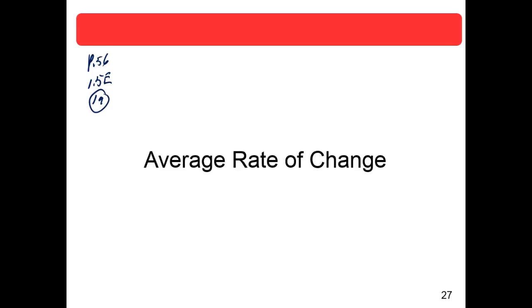It says find the zeros of the function. In these exercises, find the zeros of the function algebraically. Here's the function: f(x) — our favorite name — is equal to 1.5x³ minus x. Because we're asked to find the zeros of the function, set f equal to zero, because that's what it means — the function, the y-value, the f of x, is zero.